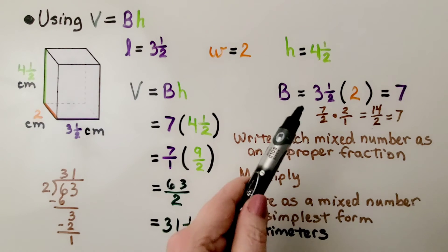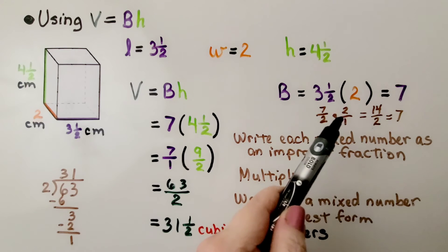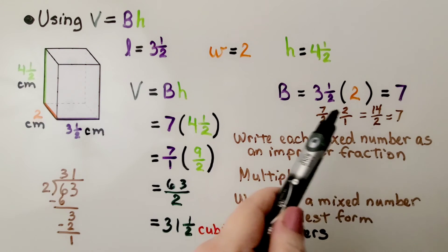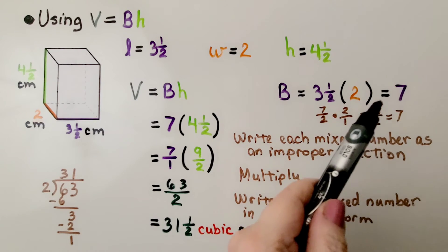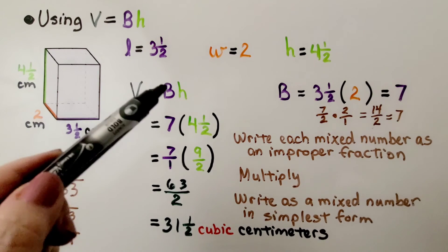That's going to give us a seven. We change the three and a half into seven halves as an improper fraction. We multiply it by two. We have fourteen over two. Fourteen divided by two is seven.